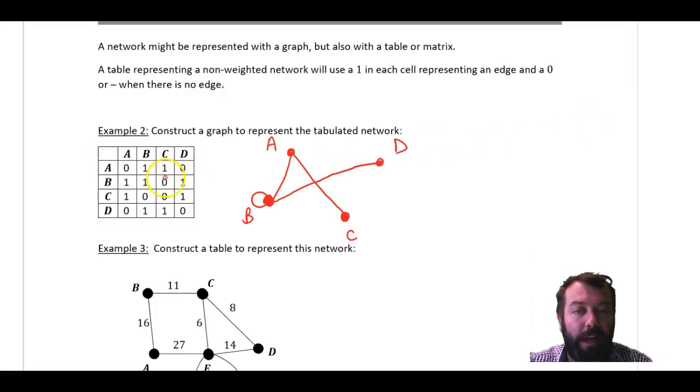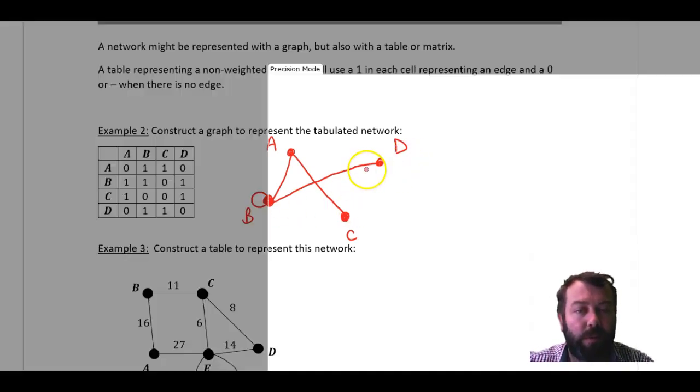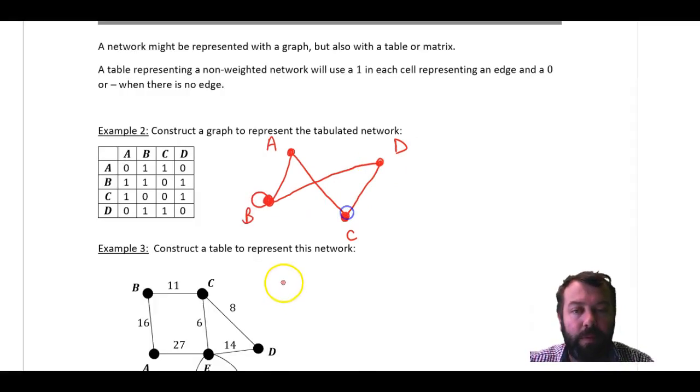Now, C to A we've already covered, and there is an edge. Nothing from C to B. There's no loop at C. C, D, there is an edge. So we'll draw this one in. And finally, D to A is already covered, D to B is covered, D to C is already done, and there's no loop at D. So that is my graph finished off, complete. There are other ways to draw that, as I said at the beginning, that may look quite different, but mean exactly the same thing. Don't worry too much if you put your vertices in a different arrangement to begin with.